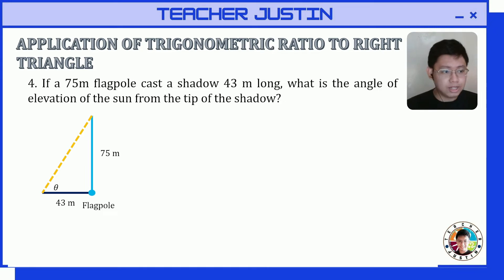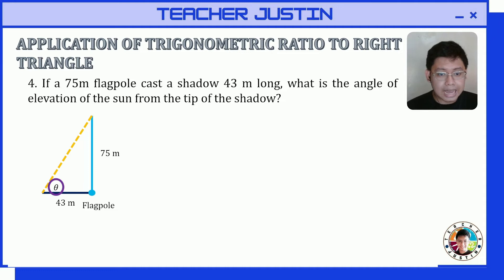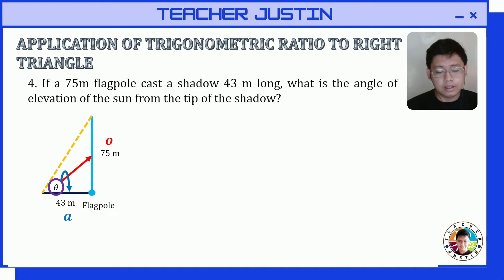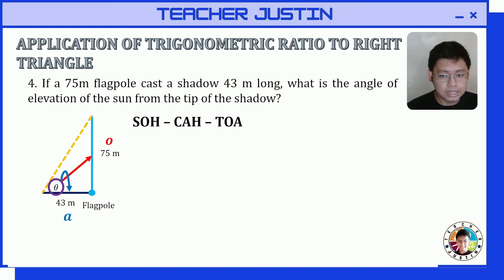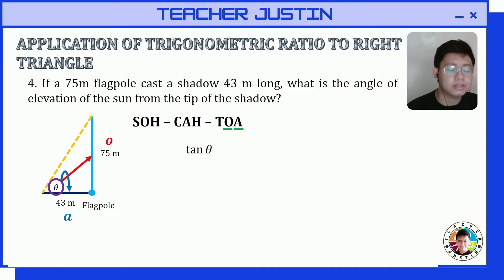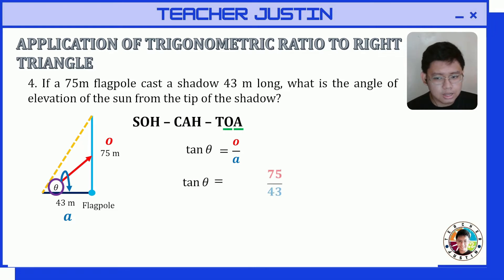Let's solve for the missing angle. The angle of elevation is located here. We're given the opposite side and the adjacent side. Using SOH-CAH-TOA, since we have opposite and adjacent, we use tangent. Tangent theta equals opposite over adjacent, so tangent theta equals 75 over 43.